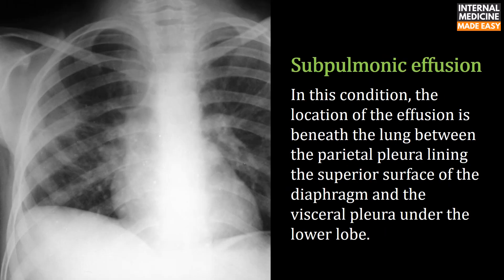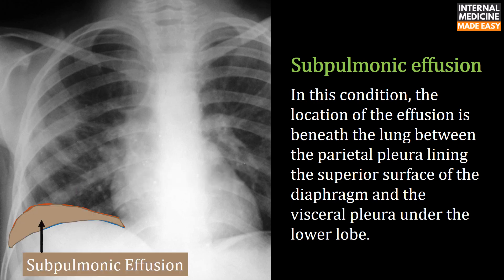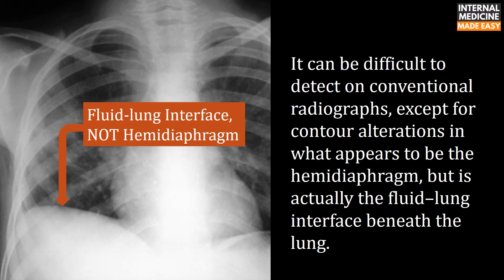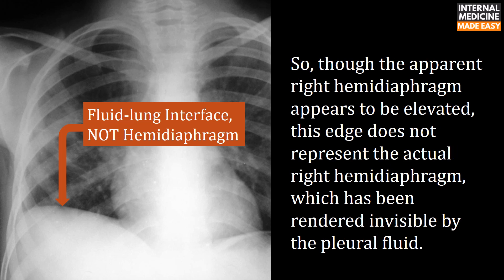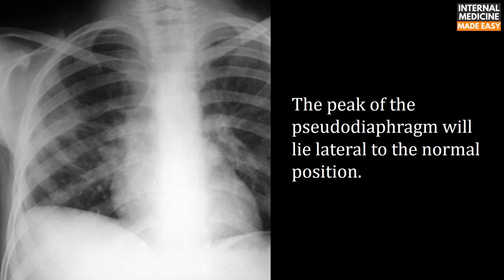Subpulmonic effusion: In this condition, the location of the effusion is beneath the lung, between the parietal pleura lining the superior surface of the diaphragm and the visceral pleura under the lower lobe. It can be difficult to detect on conventional radiographs except for contour alterations in what appears to be the hemidiaphragm, but this is actually the fluid-lung interface beneath the lung. Though the apparent right hemidiaphragm appears elevated, this edge does not represent the actual right hemidiaphragm, which has been rendered invisible by the pleural fluid. The peak of the pseudo-diaphragm will lie lateral to the normal position.